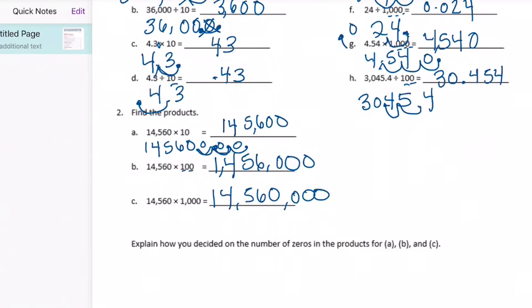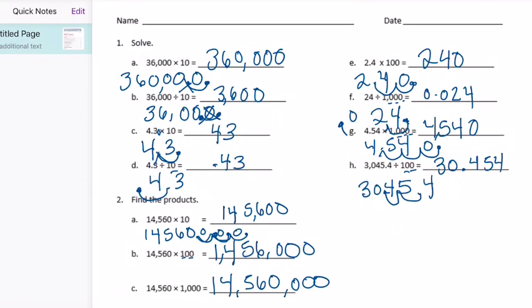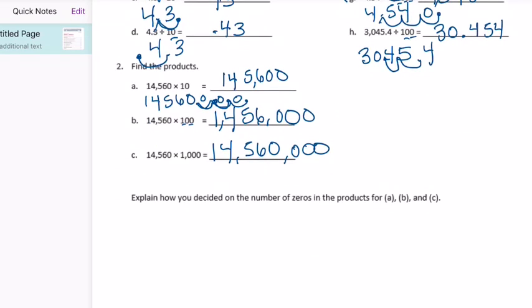Explain how you decided on the number of zeros for the products in A, B, and C. Well, multiplied by 10, add one zero. Divide by 10, we took away a zero. Multiplied by 10, we couldn't just add a zero. You can explain that in there, how that strategy doesn't always work.